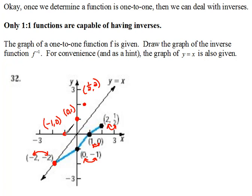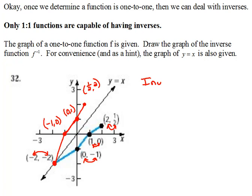Now let me play connect the dots so we can see what happens here. These are all segments between these points, so I'll try and draw it fairly decently — kind of hard with my pen width there. But look at what happened. My red graph here is the inverse function. Looking at it and the original function, do you see that they are symmetrical about the line y equals x? That will always be the case. Inverses are symmetrical about the line y equals x. This is always true.